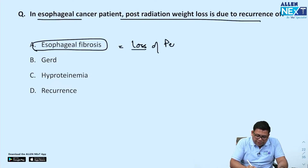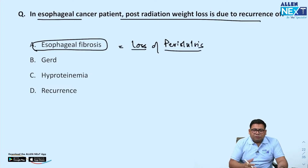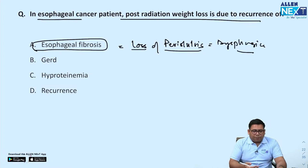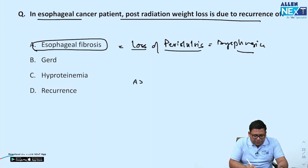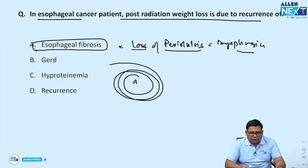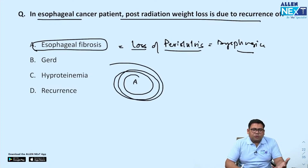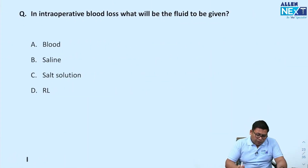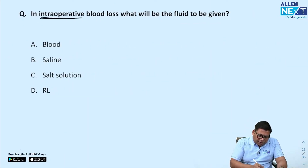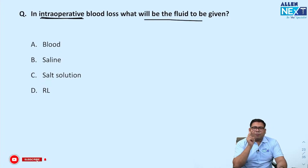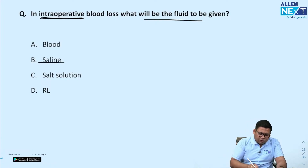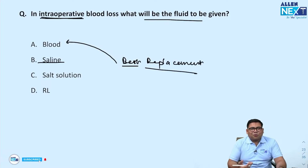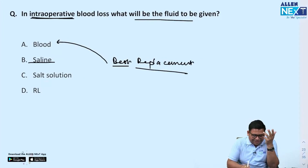In esophageal cancer, post-radiation weight loss is due to esophageal fibrosis leading to loss of peristalsis, causing dysphagia — GERD is not the reason. For intraoperative blood loss, since saline is already being given during surgery, the best replacement for blood loss is blood itself — this is a simple and important point.